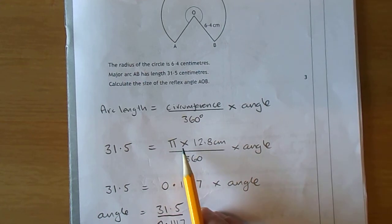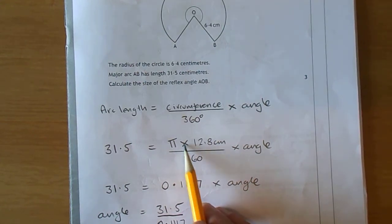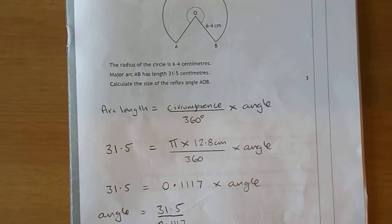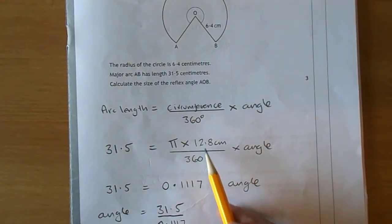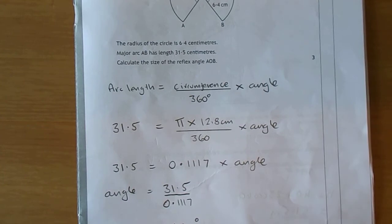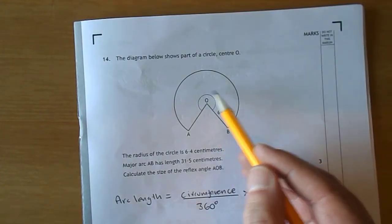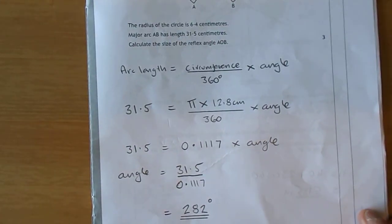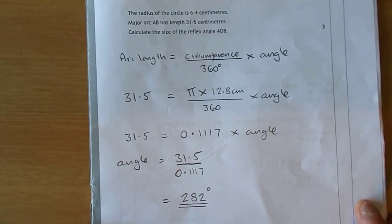The circumference of a circle is π times D. The radius is 6.4, so the diameter would be 12.8. Divide it up into 360 little bits and that is 0.1117 - that's the length of the arc opposite one degree of the sector. So divide 31.5 by 0.1117 and we get 282 degrees.